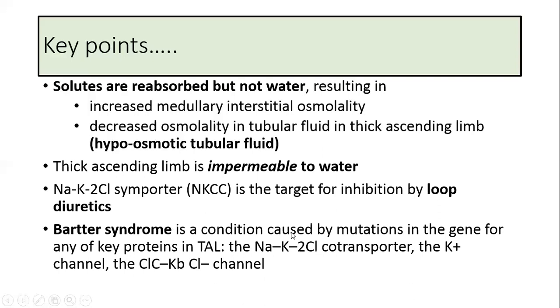Bartter syndrome is a condition which is caused by mutations in the gene for any of the key proteins present in the thick ascending limb of loop of Henle. And the key proteins are the sodium potassium 2 chloride co-transporter, the potassium channel, and the chloride channel. So there is defective transport in the thick ascending limb of loop of Henle. And this causes increase in the sodium loss in the urine and also causes polyuria.